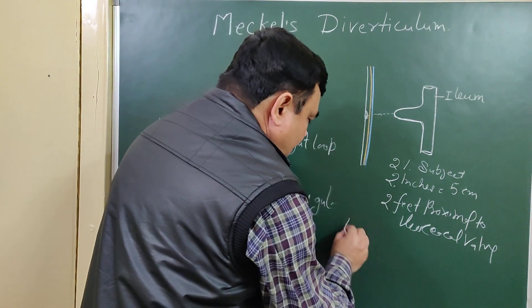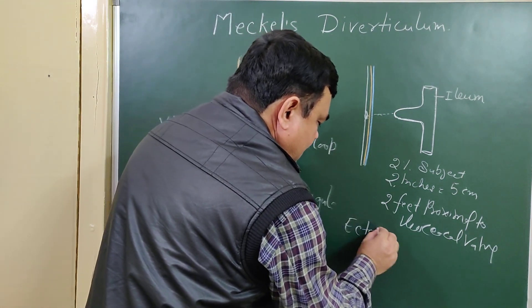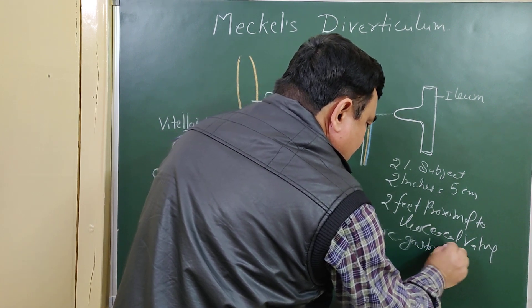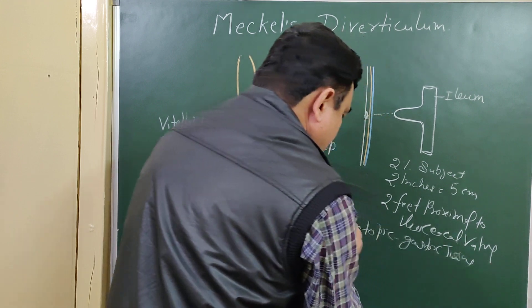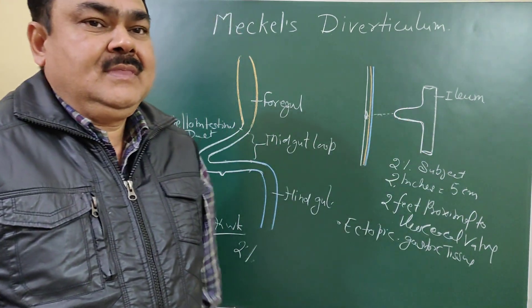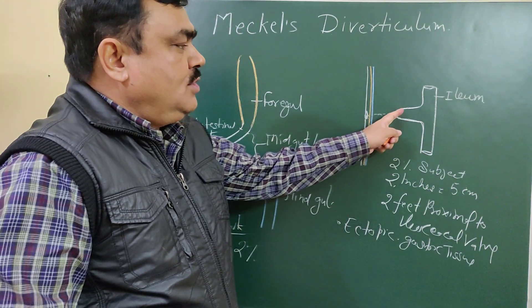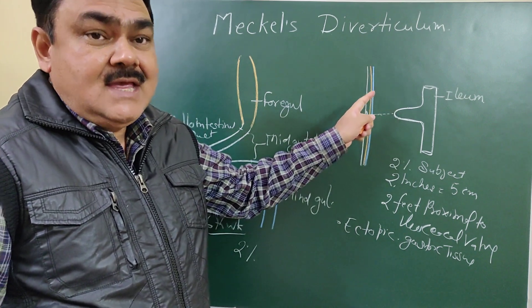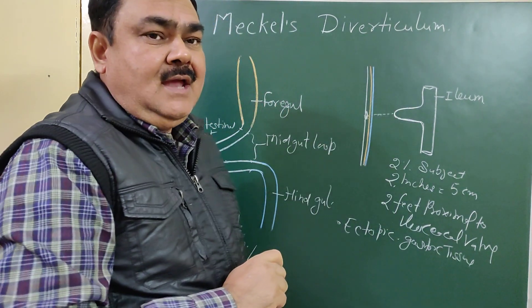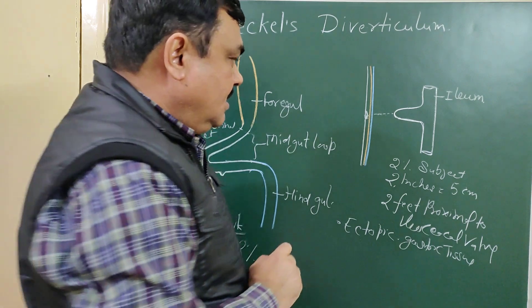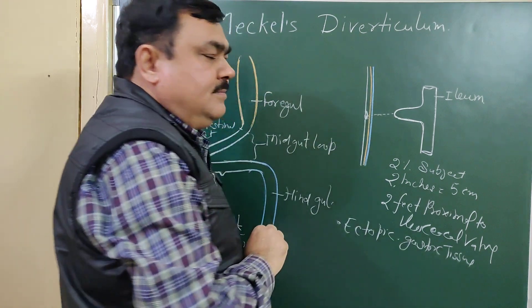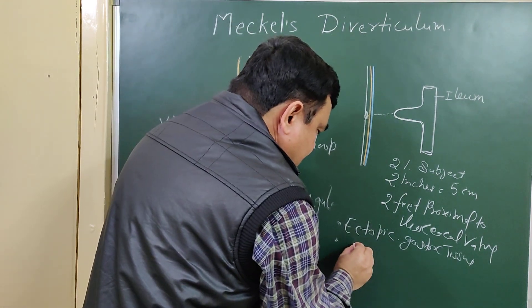Sometimes Meckel's diverticulum contains ectopic gastric tissue. If ectopic gastric tissue is present, the tissue secretes acid, which may ulcerate the diverticulum and cause hemorrhage. So peptic ulcer may occur in this diverticulum.